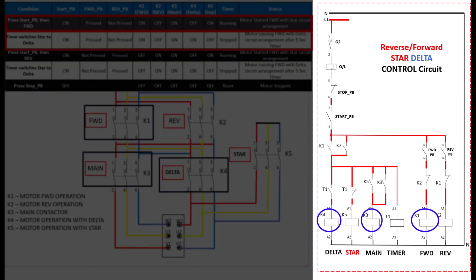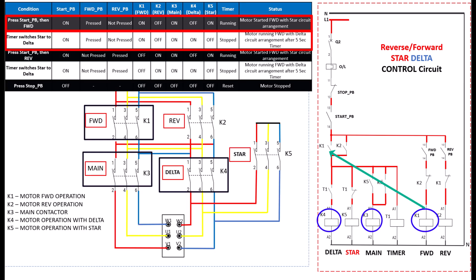Look at the control circuit. It has an interlock that ensures K3 main contactor and K5 star contactor engage only when K1 forward contactor is energized. If the motor direction is not selected, the motor will not start, ensuring proper functionality and safety.